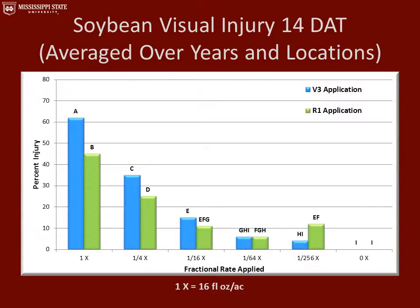This graph represents soybean visual injury 14 days after the treatments were made, averaged over all years and locations. On the y-axis we have percent injury, and on the x-axis we have the fractional rates applied as well as the untreated check. The blue bars represent treatments that received the application in the V3 growth stage, and the green bars represent the R1 growth stage. With the 1x rate, we had greater than 40% visual injury from either application timing. At the lowest rate, there was an interaction, ranging from 3% to 12% visual injury depending on application timing.